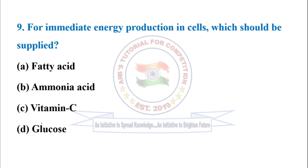Next question: for immediate energy production in cells, which should be supplied? Correct option is option D — glucose. Because glucose breaks down easily to provide instant energy. It is a simple form of energy; no need for digestion — it is directly absorbed into the blood.